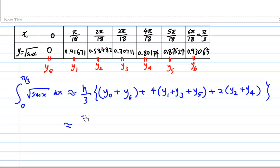I know that h equals π over 18, and then divide by 3 again. y0 and y6, which I'm going to use some color to indicate, y0 is here, y6 is here, and this will give me 0 plus 0.93065.